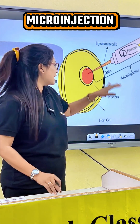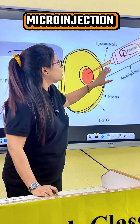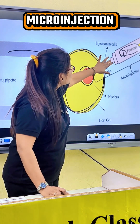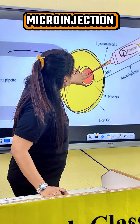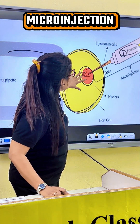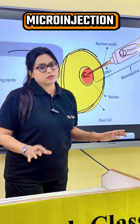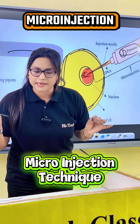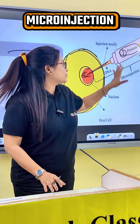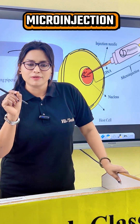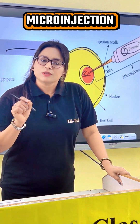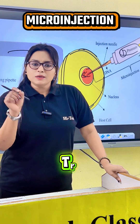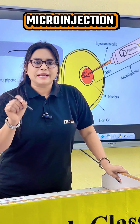With the help of pressure, we push this DNA directly into the nucleus of the cell. This process is known as the microinjection technique because we are using a fine glass needle. This technique is mostly used to form transgenic animals, like mice.